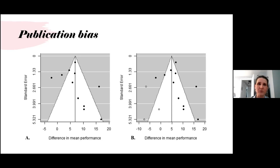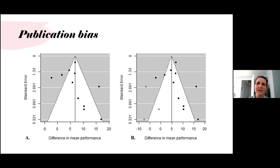The funnel plot of our studies appears slightly asymmetrical, with the lower left area appearing to be missing some studies — an area corresponding to smaller studies that would have favored the lecture classroom — suggesting that studies may be missing due to publication bias or file drawer effects.